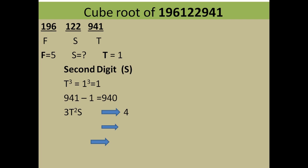Equate this middle digit 4 with the formula 3T²S, where T is the third digit and S is the second digit — this is the only formula in the whole method. So: 3 × 1² × S = 3S. We set 3S equal to 4, meaning we need a number S such that 3 × S ends in 4. Three multiplied by 8 gives 24, which ends in 4. No other digit gives this last digit, so the second digit is 8. The final answer is 581.